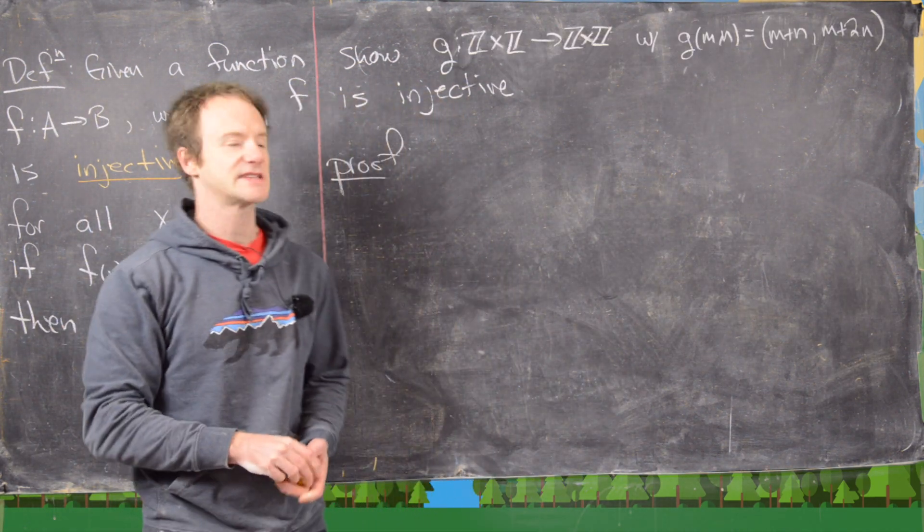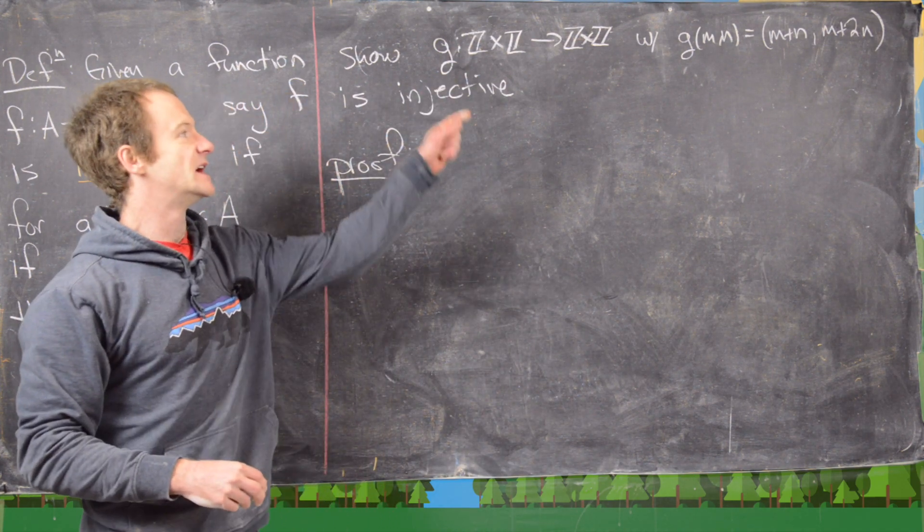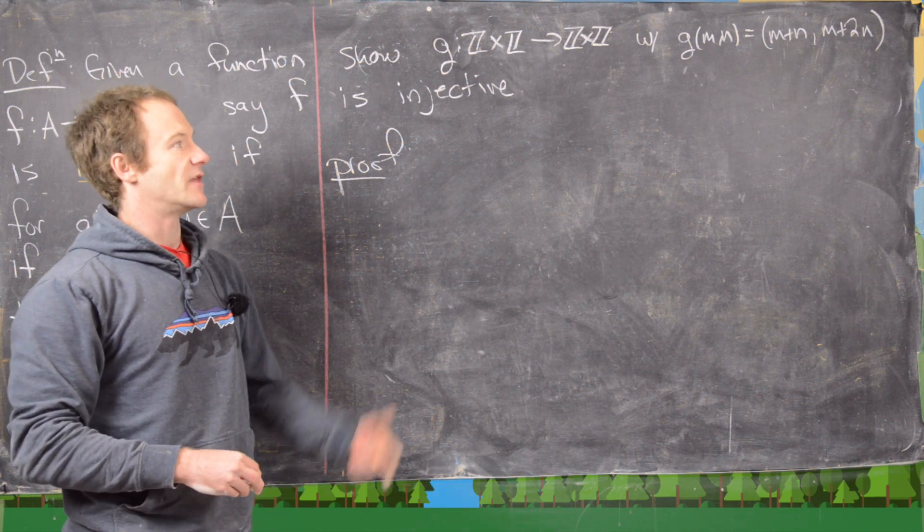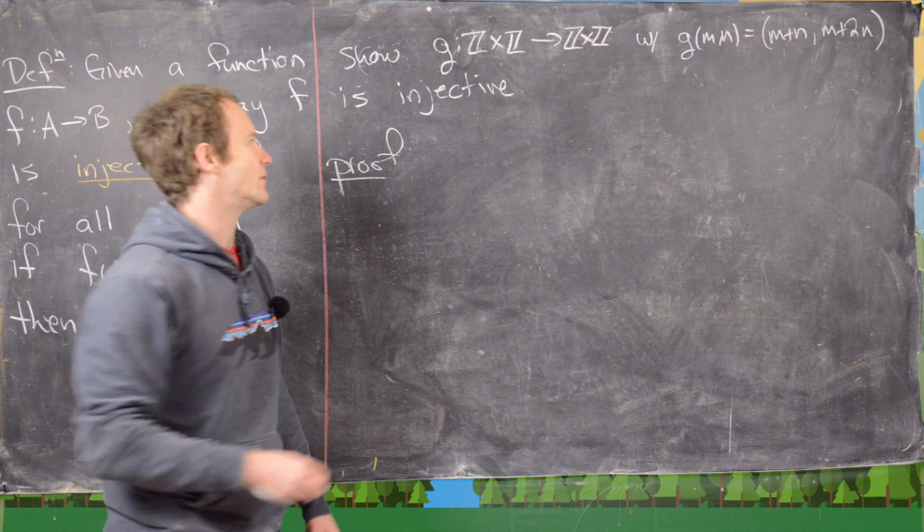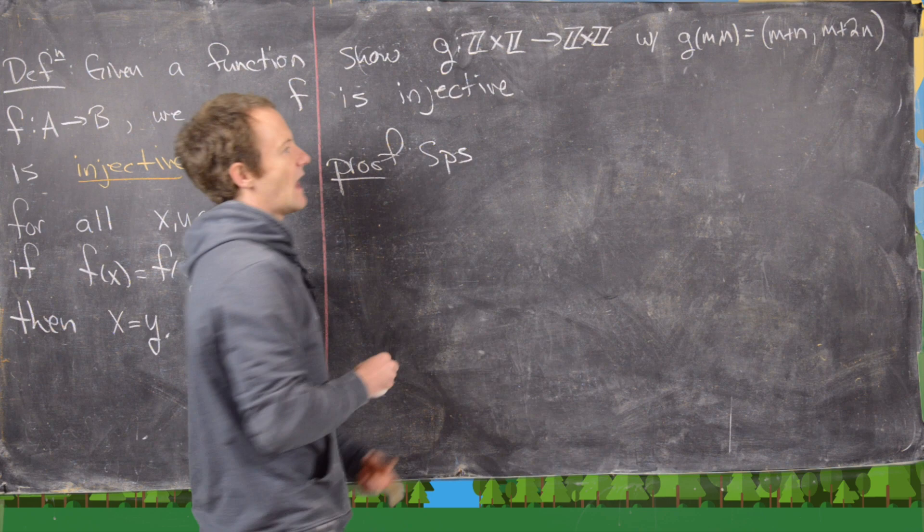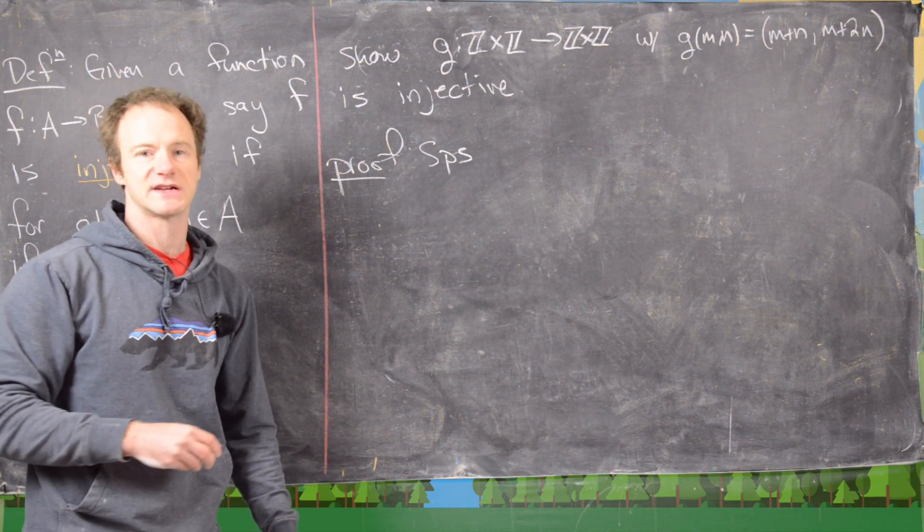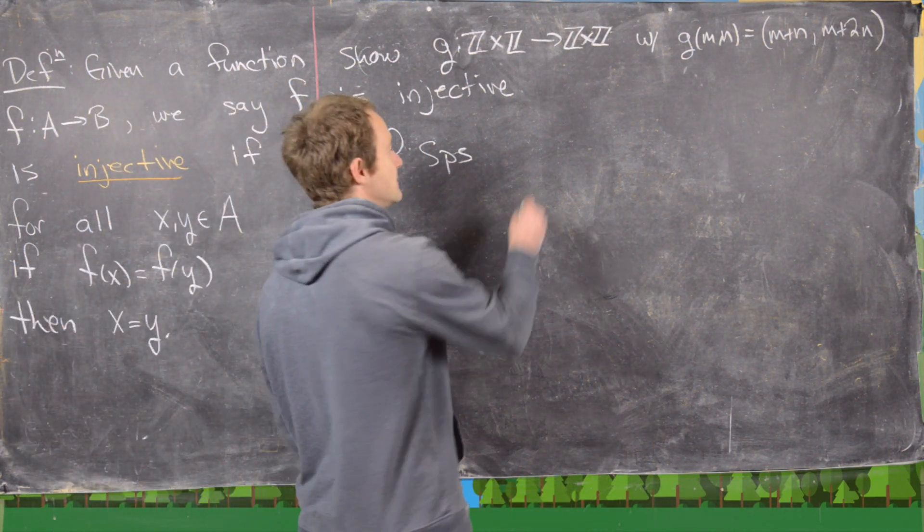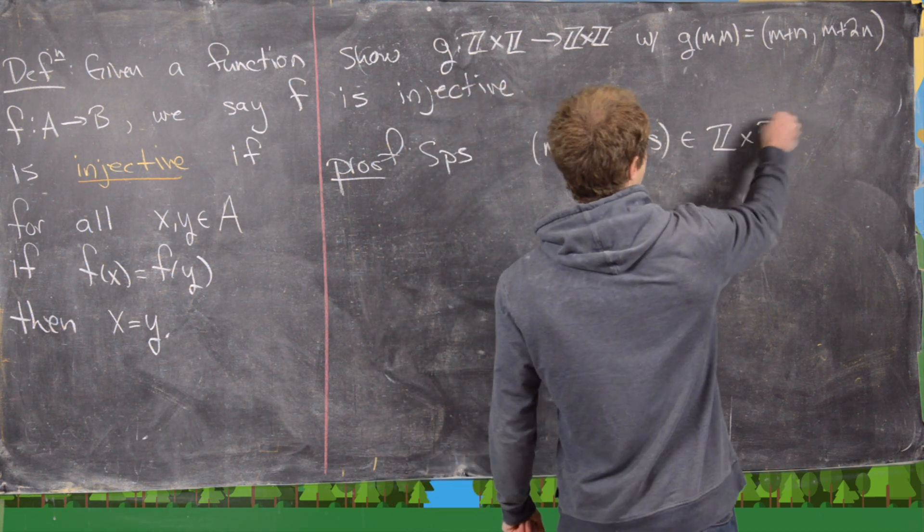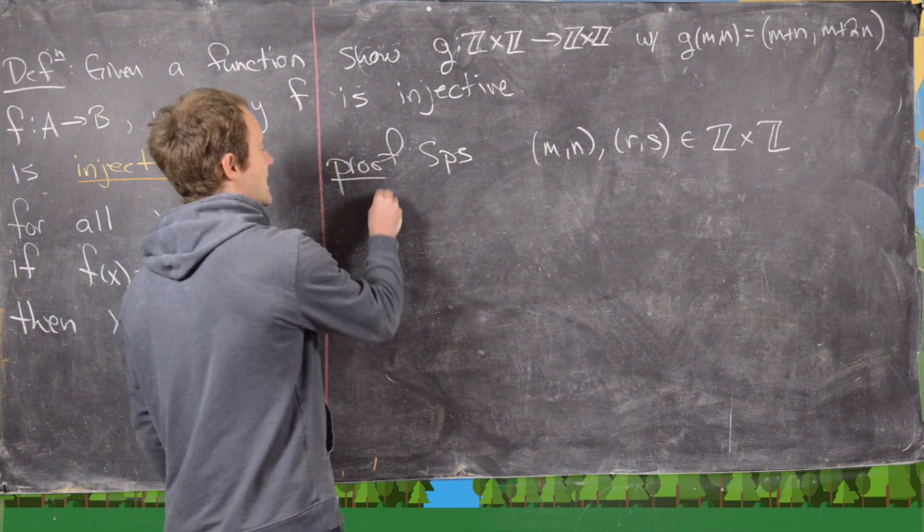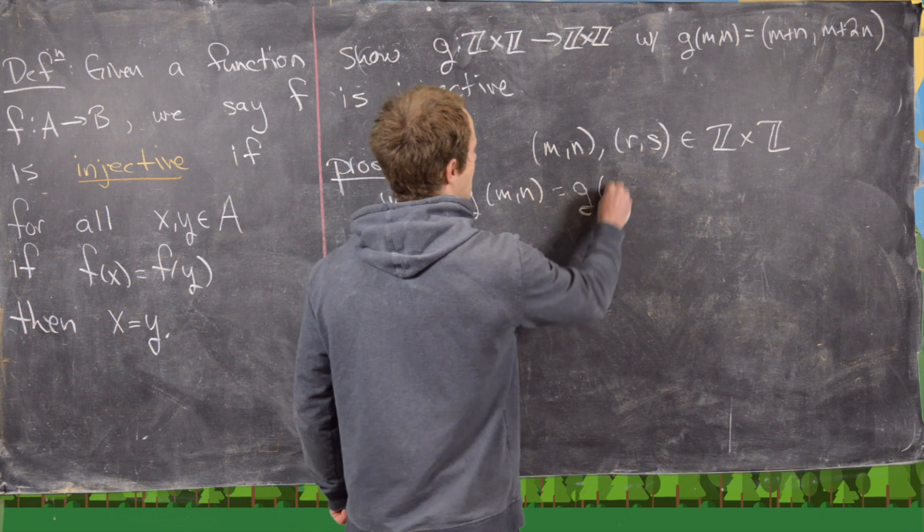Okay. So for our next example, we'll look at the following function. So we've got this function g from Z cross Z to Z cross Z. It's given by g of mn equals the ordered pair m plus n, m plus 2n. So we're going to follow the same outline that we did before. So let's suppose that we have two elements of the domain. So last time we wrote them as x and y, but maybe we want to choose something different because our domain is Z cross Z. So let's choose m comma n and maybe r comma s. Those are both elements of our domain Z cross Z. And they satisfy this rule that g of mn equals g of rs.